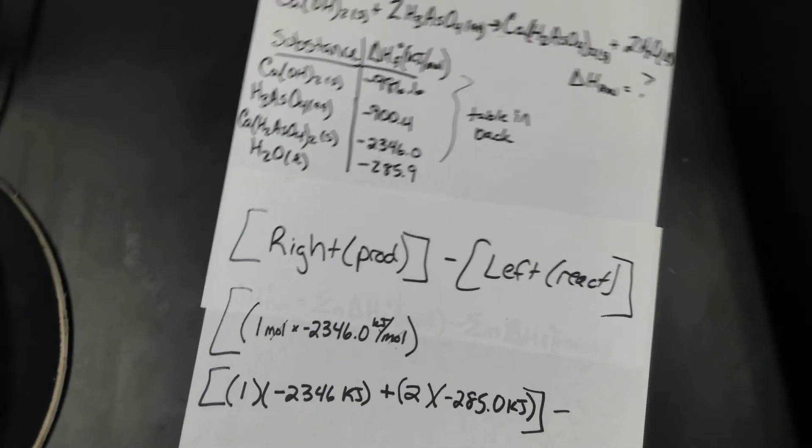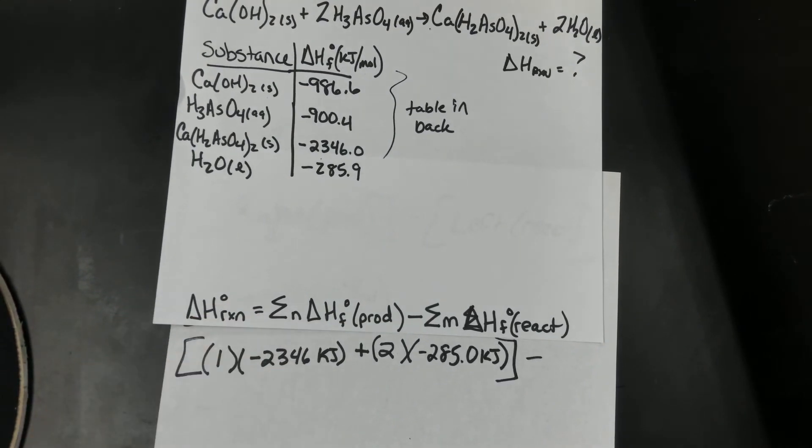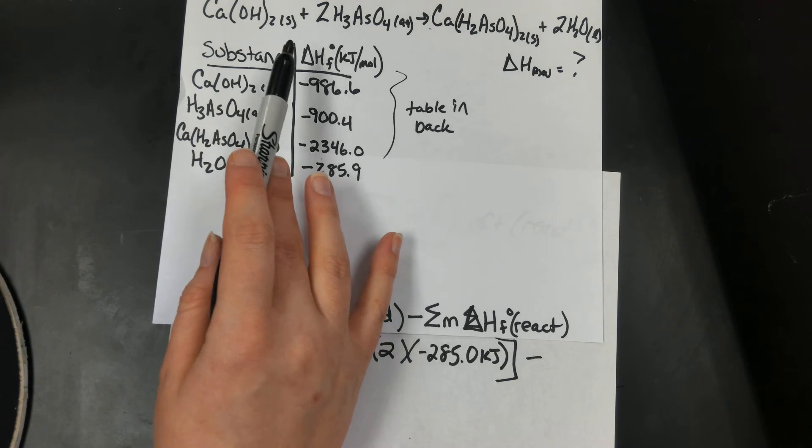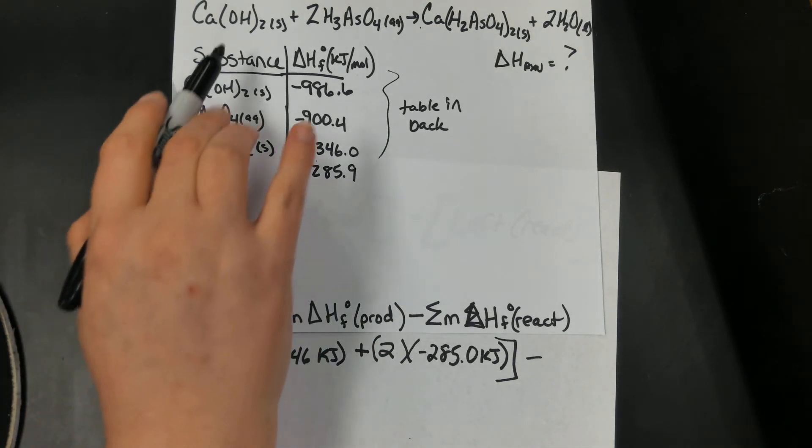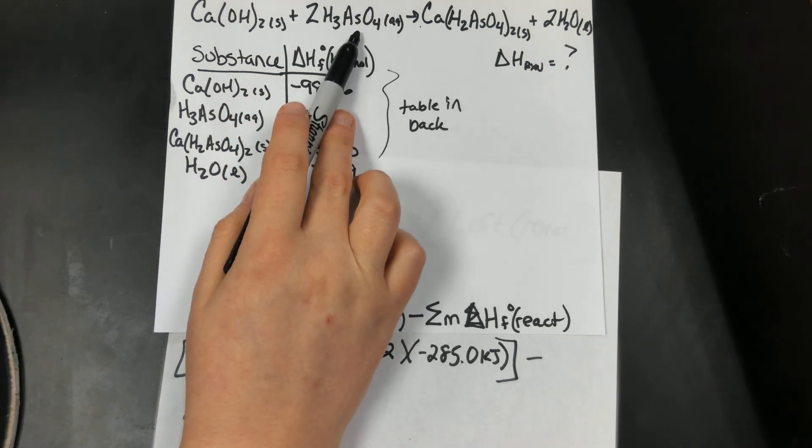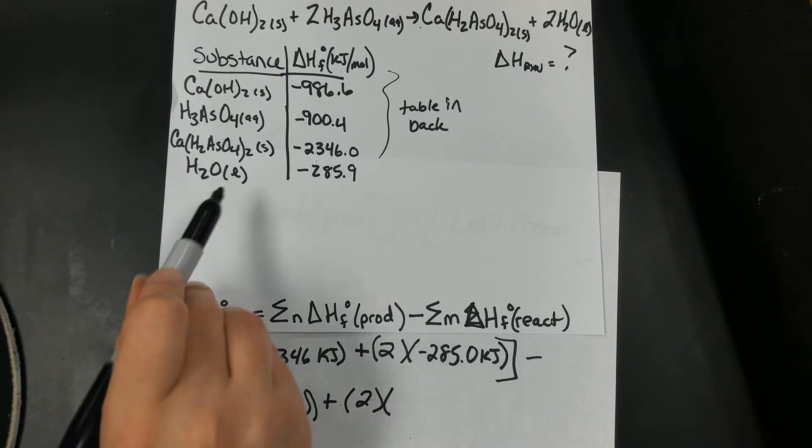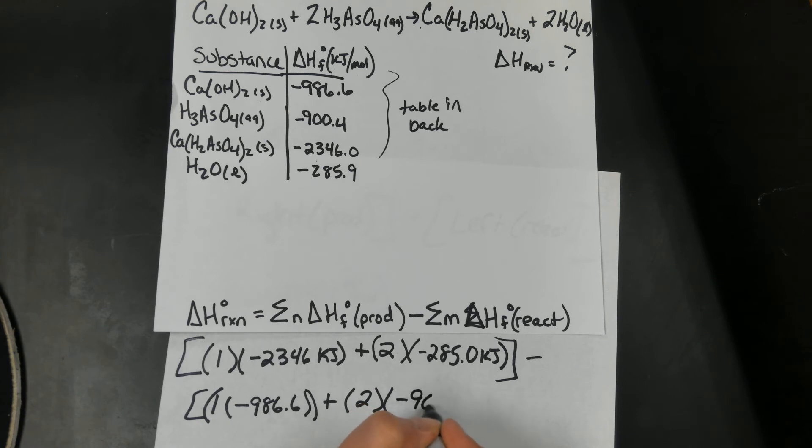Minus, now, let's go ahead and do my left-hand side. I'm going to have 1 of the calcium hydroxides because that coefficient in front of it is 1. So 1 minus 1 times negative 986.6 plus 2 of this arsenic acid. So I'm going to write 2 of these, negative 900.4.